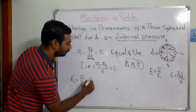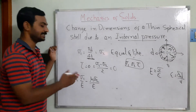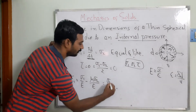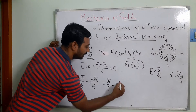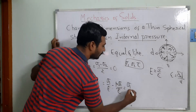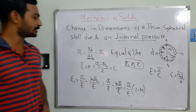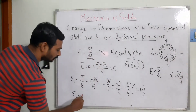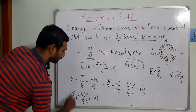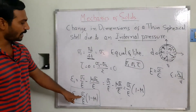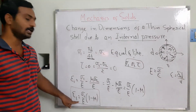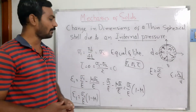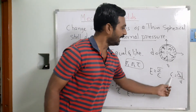Epsilon 1 = Sigma 1/E - mu * Sigma 2/E. Since Sigma 1 = Sigma 2, this simplifies to Sigma 1/E * (1 - mu). We know Sigma 1 = PD/4t, so substituting gives the strain in terms of pressure and dimensions of the component: epsilon = PD/(4tE) * (1 - mu).